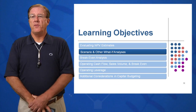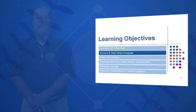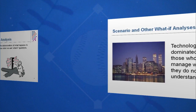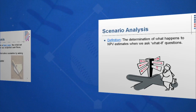In learning objective two, we're going to look at different types of what-if analyses, one of which is scenario analysis. Scenario analysis determines what happens to our NPV when we start asking what if — what if on volume, what if on price, what if on cost, both variable and fixed.